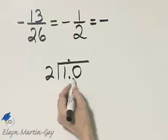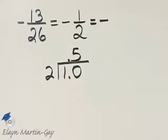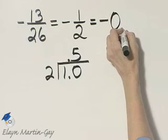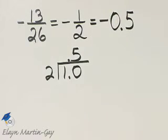We'll divide 2 into 10, and 2 goes into 10 5 times, so this is negative 0.5. I just like to write a 0 before my decimal point.